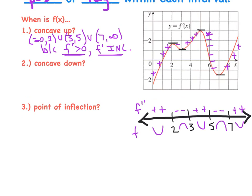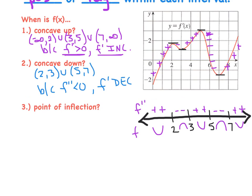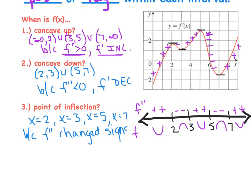f is concave up from negative infinity to 2, from 3 to 5, and from 7 to infinity because f double prime is positive — or you could say f prime is increasing. f is concave down from 2 to 3 and from 5 to 7 because f double prime was negative, or f single prime was decreasing. Points of inflection occur at x equals 2, 3, 5, and 7 because f double prime changed signs — or f single prime changed from increasing to decreasing and vice versa.